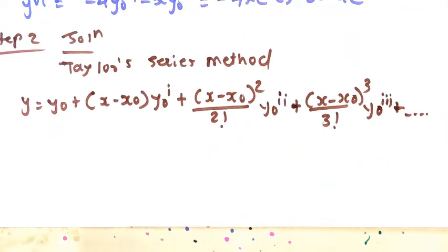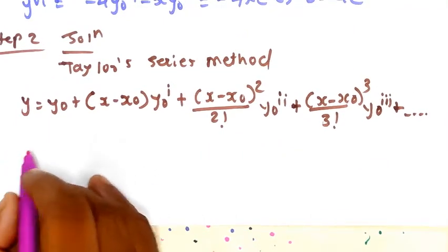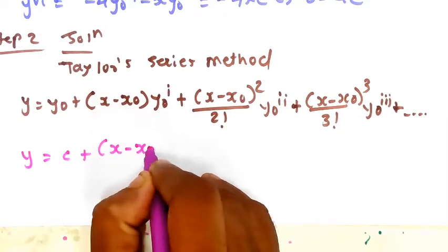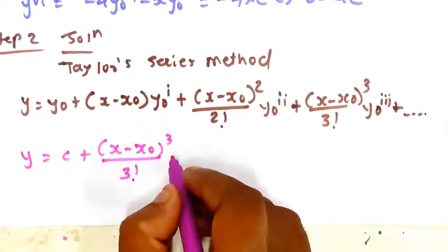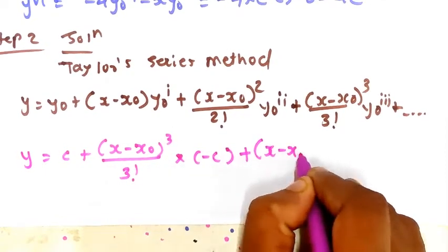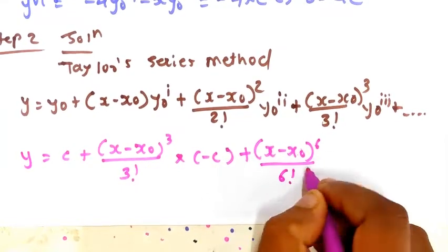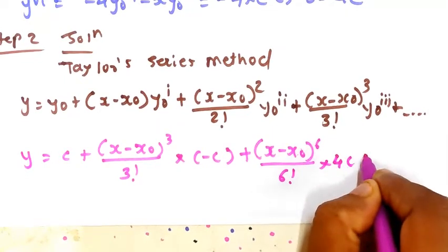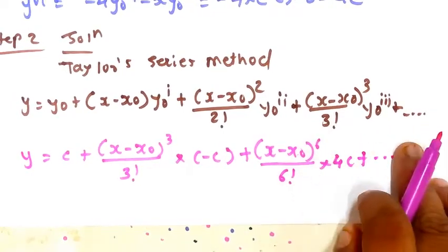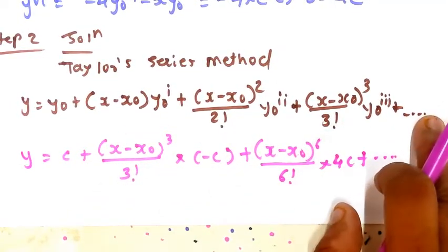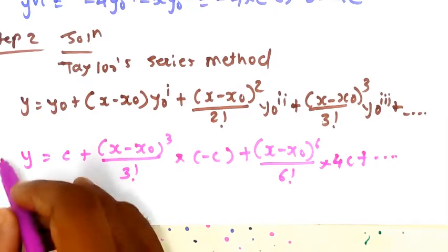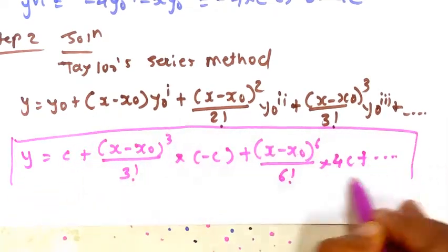After substituting the values and simplifying, we get: y = c + (x - x₀)³/3! · (-c) + (x - x₀)⁶/6! · 4c + … Note that the terms with zero derivatives drop out, leaving only the non-zero terms.